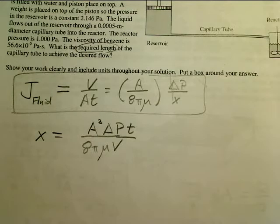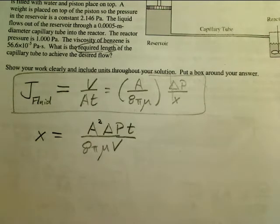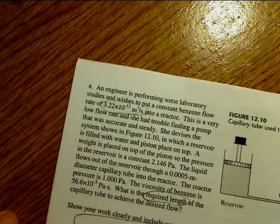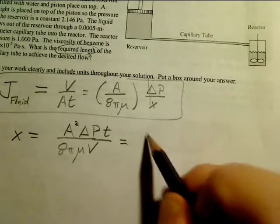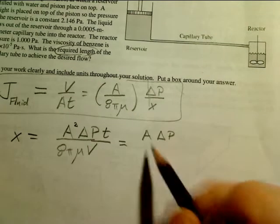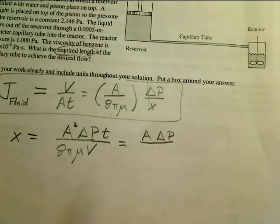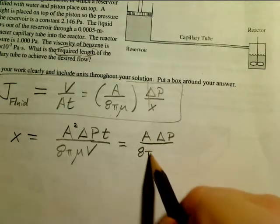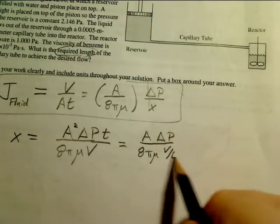Now there's one unfortunate thing that kind of happened unexpectedly there, and that is they don't give you the volume or time, they give you volume over time. So I'm going to do a clever regrouping for you, and this is area delta P, and then I'm going to divide top and bottom by T.